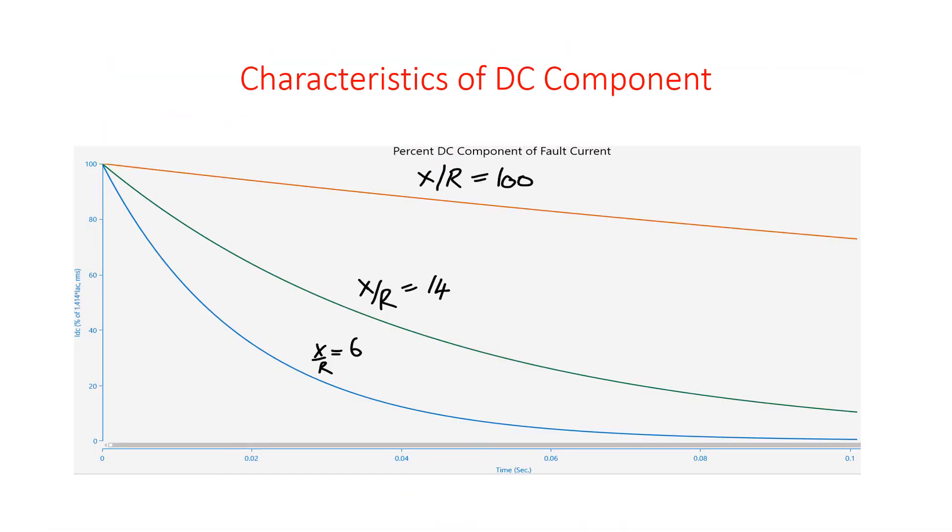Now, the question is why peak current is greater when we are changing X by R value. This is because of DC component. Your X by R value is low means DC component decaying quickly. That you can see here from the blue curve. For 14, the time taken to reach 0 is slightly higher. For X by R value of 100, it is taking too much time to reach 0 value.